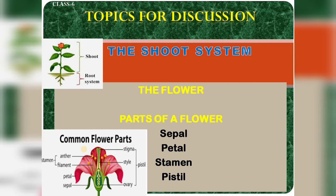Let's talk about the parts. The flower usually develops on the branch from the bud. A flower is a modified stem. A stalk called pedicel attaches the flower to the branch.